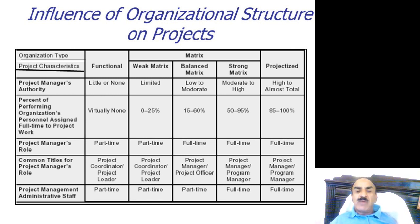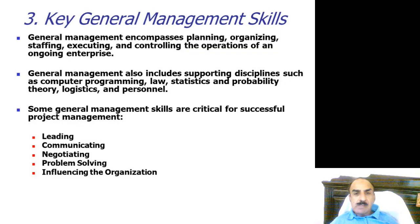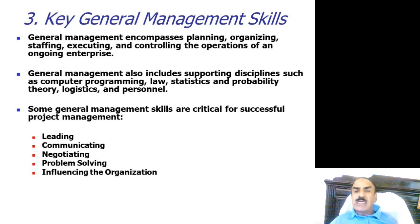If project managers have strong authority and powers, it is a strong matrix. If they have only a coordination role with functional departments, it is a weak matrix. In between, we try to balance the roles, responsibilities, and powers of project managers and functional managers, creating a balanced matrix organization. We also need a wide range of skills to deal with projects, including computer programming, law, statistics, probability theory, logistics, supply chain management, as well as leading, communicating, negotiating, problem solving, and influencing.